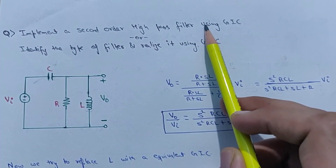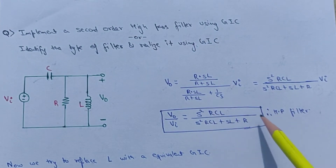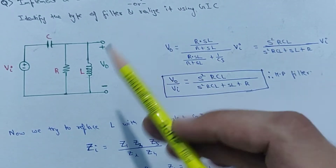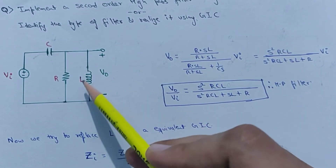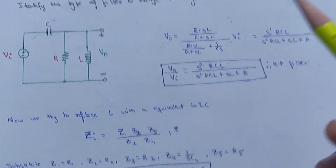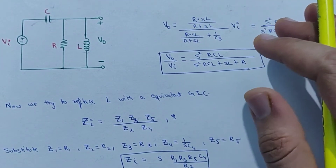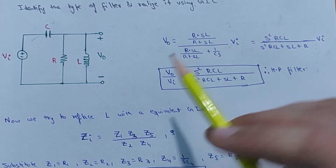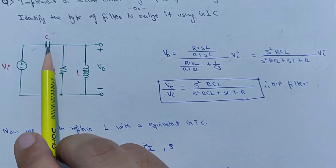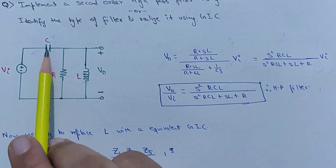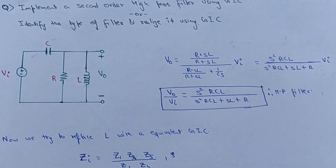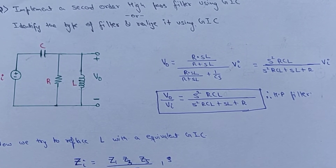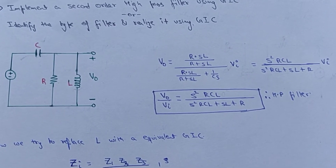So no matter which type of question is asked, the first step will be to prove that it is a high pass filter using the standard configuration. Now what we will try to do is replace the inductor with a combination of op-amps, which we will call a generalized impedance converter. Some students may ask why we replace the inductor and not the capacitor or the resistor — you have to remember just one thing.